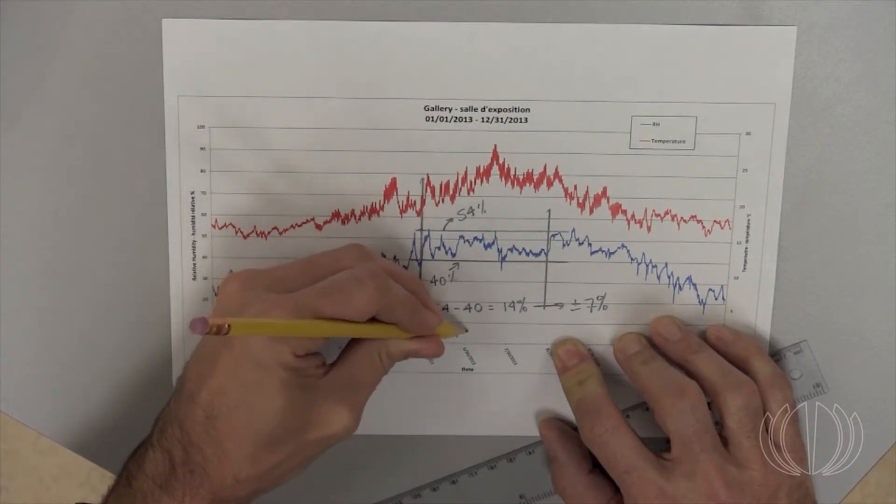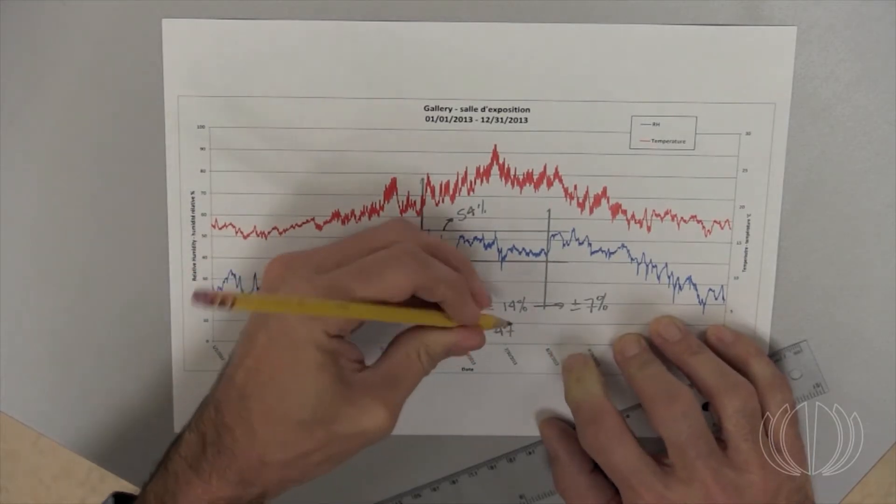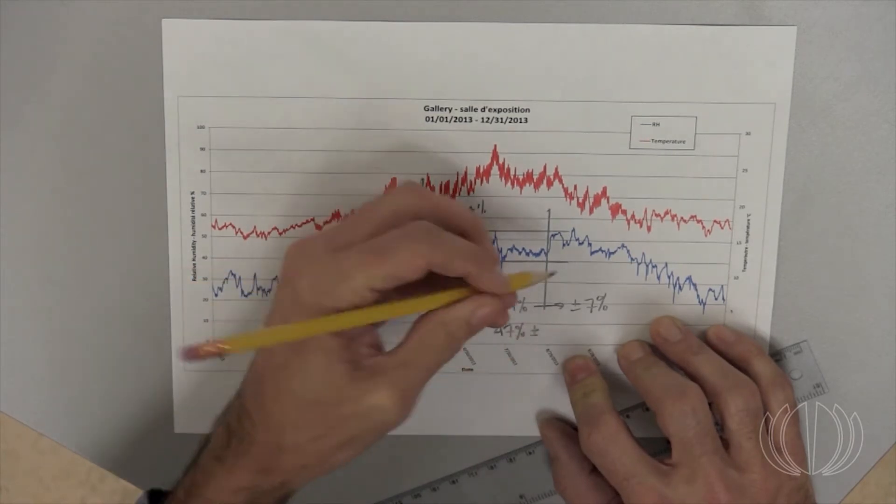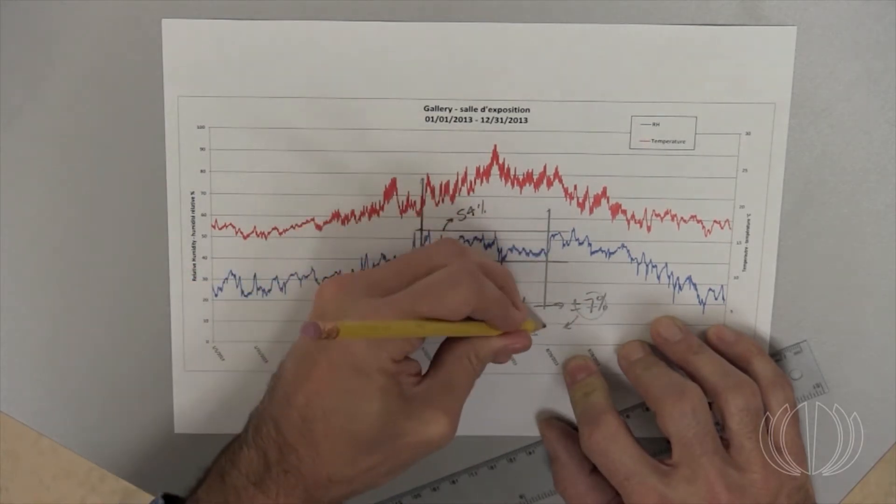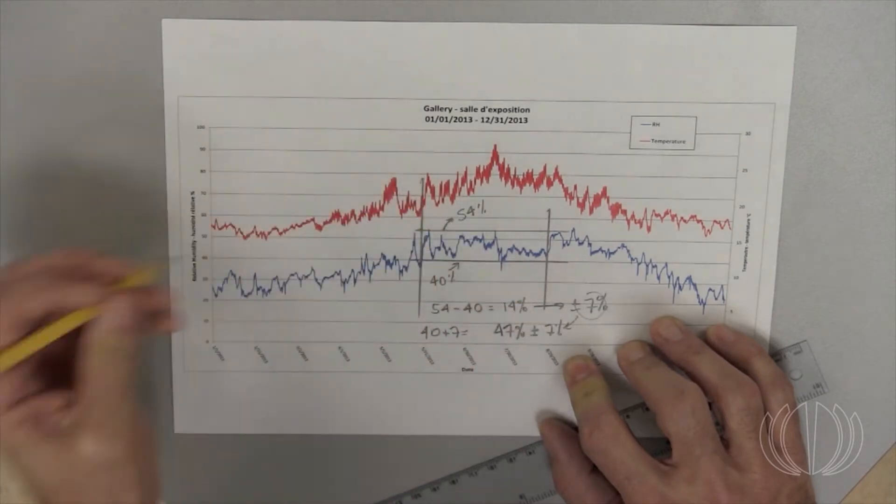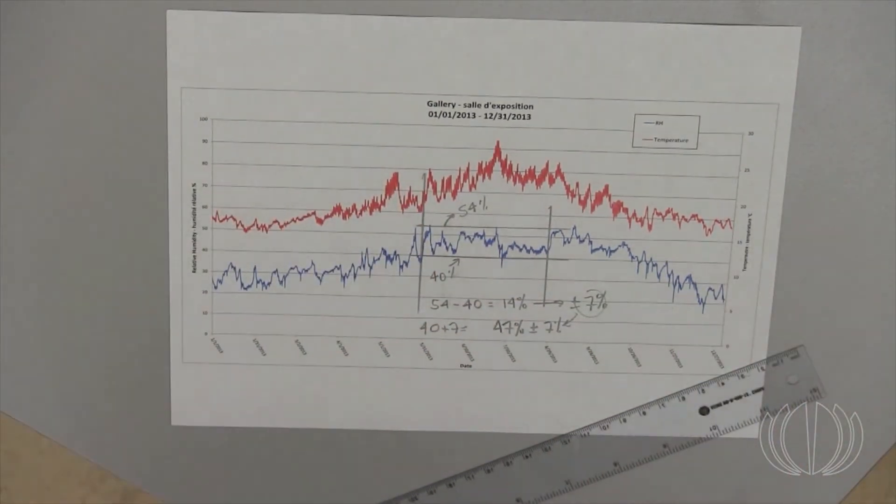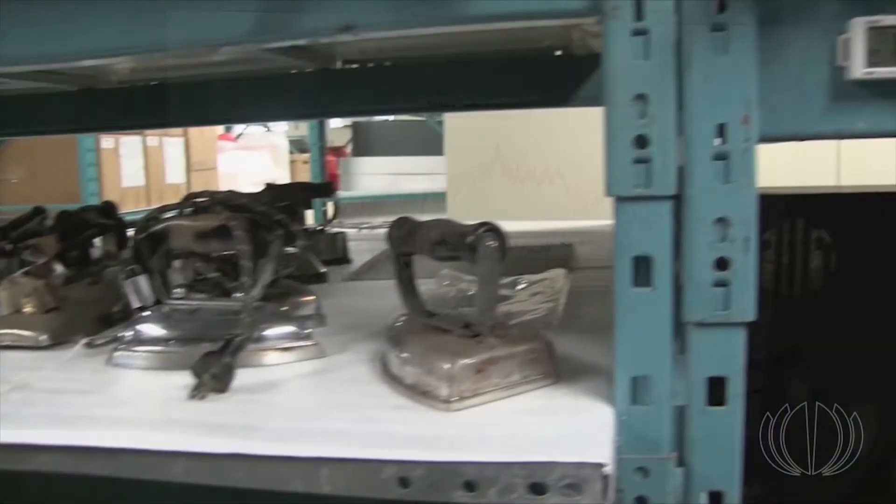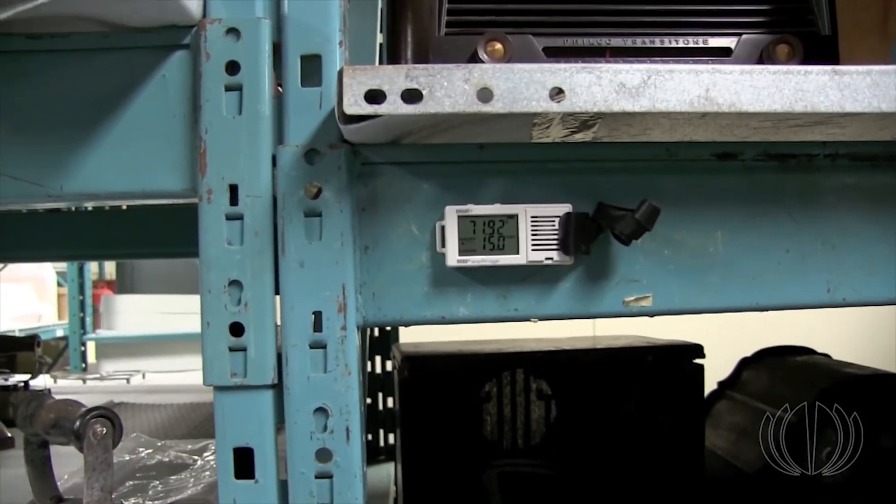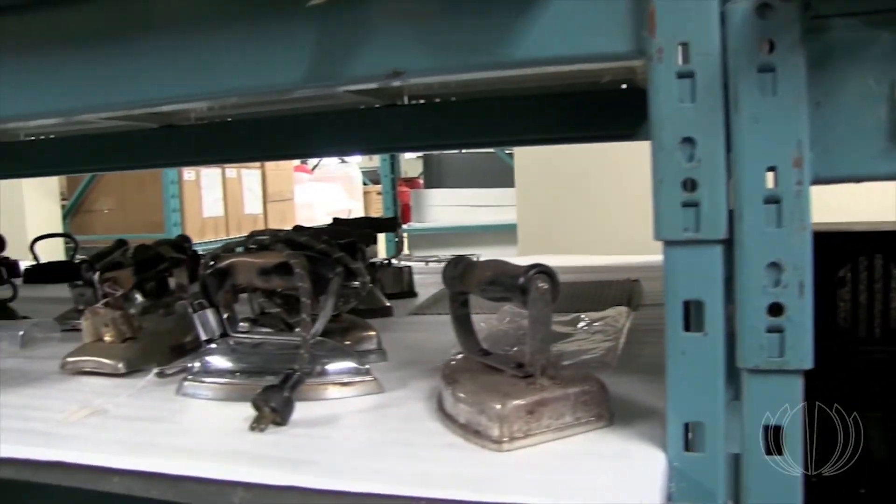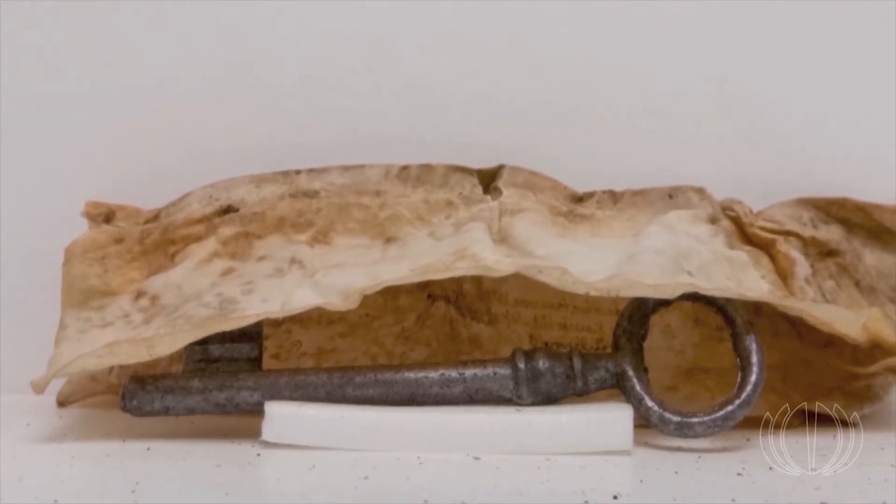Once you have collected the data and reviewed it, you will have reliable evidence of the conditions your collection experiences. You may discover that your environmental conditions are entirely appropriate for your collection, or you may discover that you need to make adjustments for specific objects or collections. Here are some things that you should be looking for.